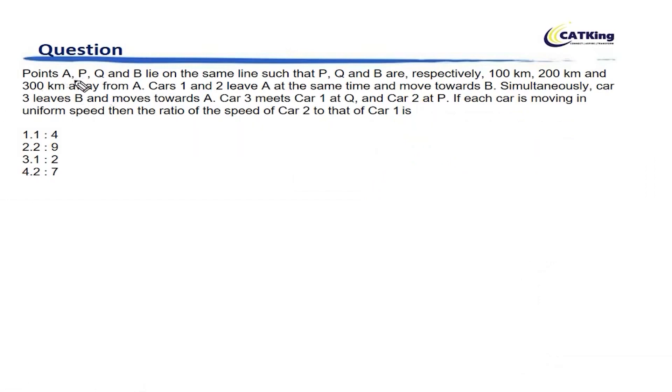The question says that points A, P, Q, and B lie on the same line such that P, Q, and B are 100, 200, and 300 kilometers from A. Practically, the distance between each of these points is the same, which is 100. So it is A here and B here, and P and Q are also given. Now the gap between A and P is also 100, between P and Q is also 100, between Q and B is also 100, so that AP is 100, AQ is 200, and AB is 300. That's what is given here.